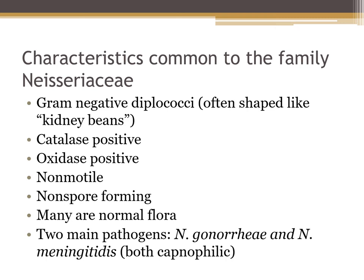They are non-motile and non-spore forming, and many are normal flora. There are many non-Neisseria pathogens, including Neisseria sicca, Neisseria lactamica, and Neisseria elongata. However, the two most important pathogens we'll talk about are Neisseria gonorrhoeae and Neisseria meningitidis. Both are capnophilic and require CO2. The non-pathogens macroscopically look small, dry, yellow, and wrinkled, while the pathogens can look tannish or greenish and often appear damp.